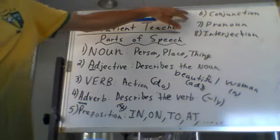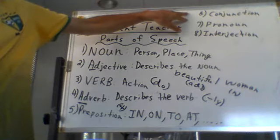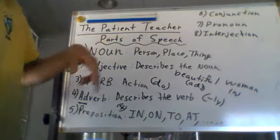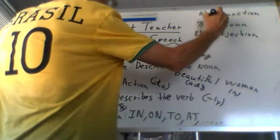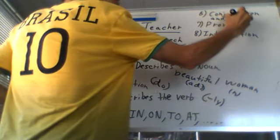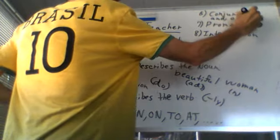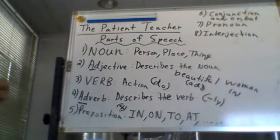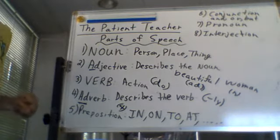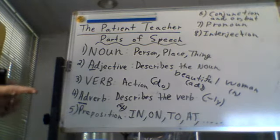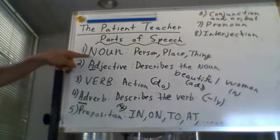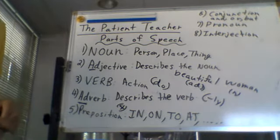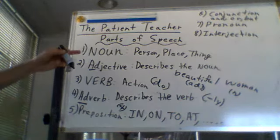We have three others but we don't use them quite as much or they're not as important. A conjunction — those are: and, or, and but. Pronouns we can look up: I, he, it — a pronoun just takes the place of a noun. And an interjection. But they're not as important as the others.